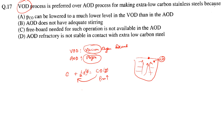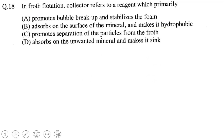Looking at the options: pCO can be lowered to a much lower level in the VOD than in the AOD — yes, this is the correct answer. VOD does not have adequate stirring — no. Freeboard needed for such operation is not available in VOD — it is available. VOD refractory not stable in contact with extra low carbon — not true. So option A is correct.